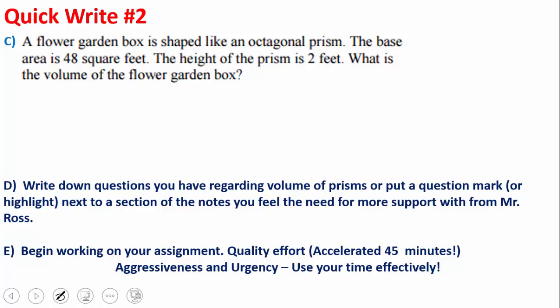Ladies and gentlemen, our quick write number 2. We're done with volume of prisms. Quick write number 2. It says a flower garden is a box. And it's shaped like an octagonal prism. The base area is 48 square feet. And the height of the prism is 2 feet. What is the volume of the flower garden box? So I gave you an odd shaped octagonal prism. I told you what the area of the base is. You multiply it by the height. And there you will have it.